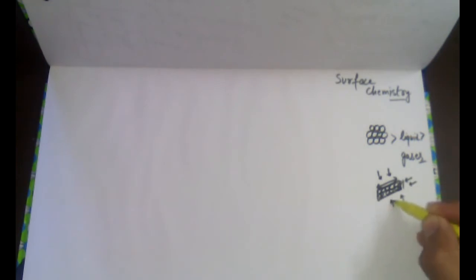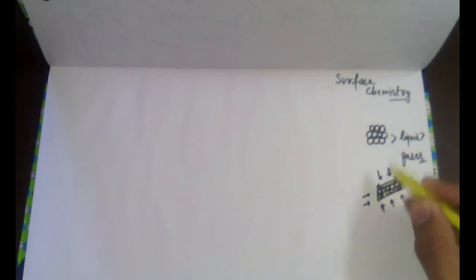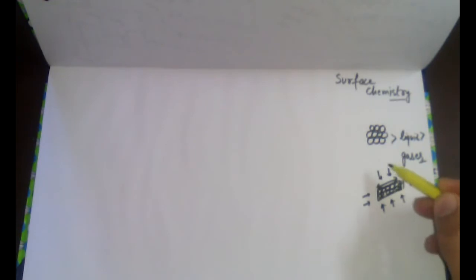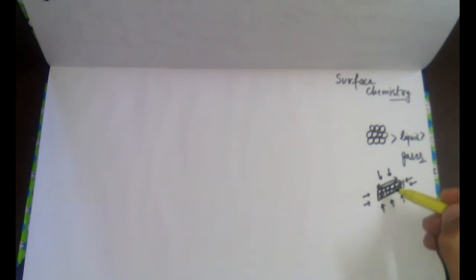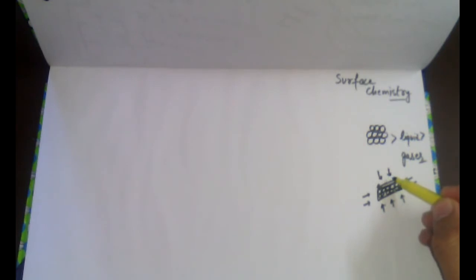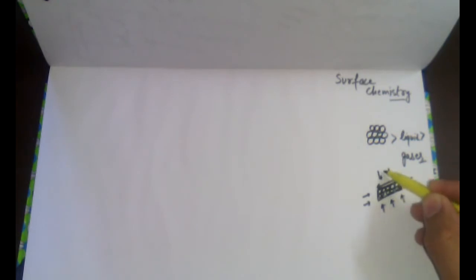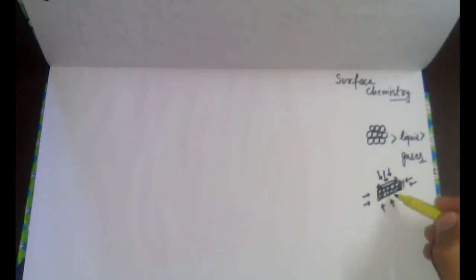The surface of this solid piece of wood has unbalanced forces, which means it has the tendency to take up surrounding particles — surrounding particles may be liquid or gas. Since there are numerous gas particle atoms constantly striking this surface, there is a higher concentration of gas particles available at the surface of this piece of wood.